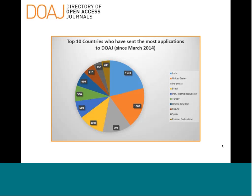This shows how many countries have sent the most applications to DOAJ in the last couple of years, with India at the top. India also has a high number of predatory — or what we prefer to call 'questionable' — publishers, so we need to be very careful when we review journals. That's why we implemented stricter criteria and required reapplications for journals already in the system.